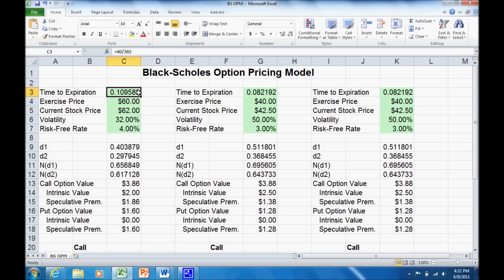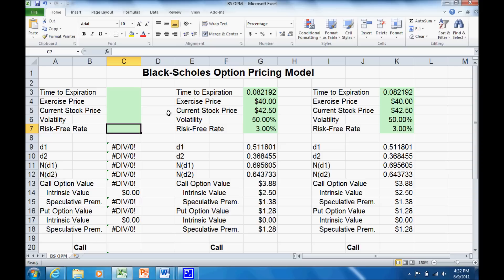The spreadsheet has the five key input variables for the value of an option: time to expiration, exercise price, stock price, volatility, and risk-free rate.